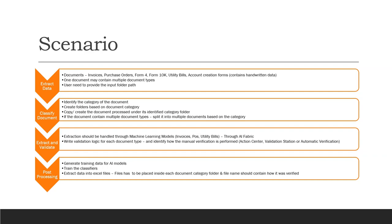We have a simple scenario to work on. There are four main steps in the extraction of data. The documents we'll be using include invoices, purchase orders, Form 4, Form 10K which contains financial information, utility bills, and account creation forms containing handwritten data. To increase complexity, one document may contain multiple document types — a single PDF file might have an invoice on one page and a purchase order on another.